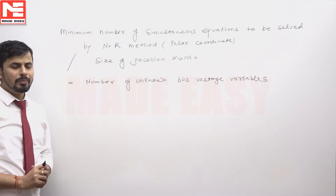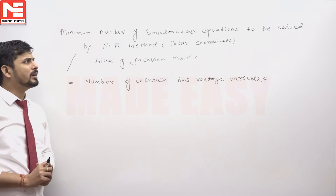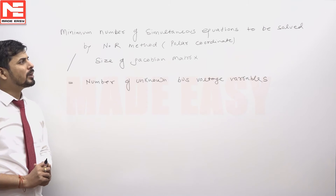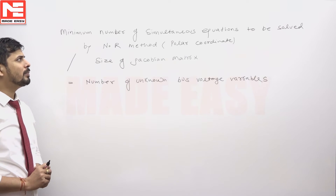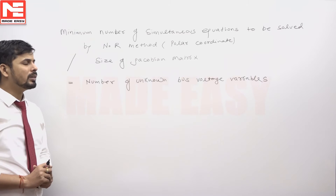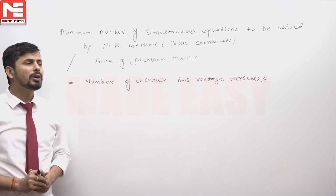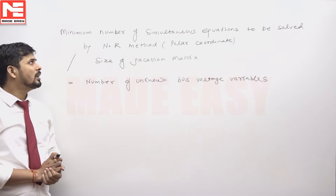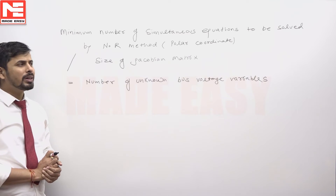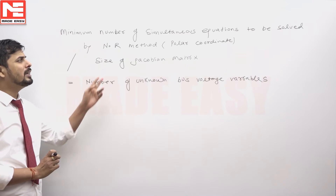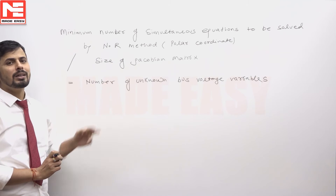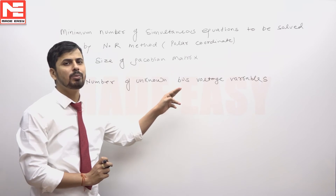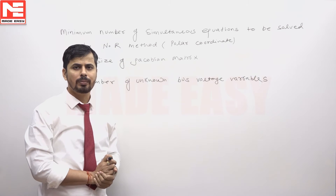A 200-bus system is given and it is required to find the minimum number of equations to be solved by the Newton-Raphson method in polar coordinates. We know that the minimum number of simultaneous equations to be solved, or the size of the Jacobian matrix, will be equal to the number of unknown bus voltage variables present in the system.